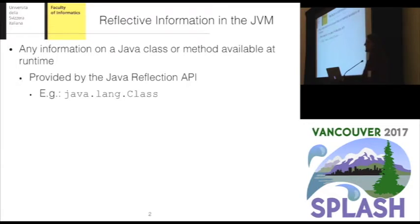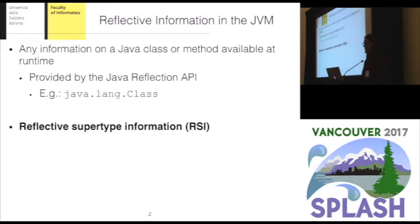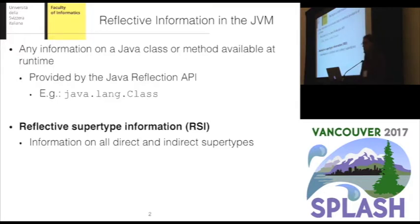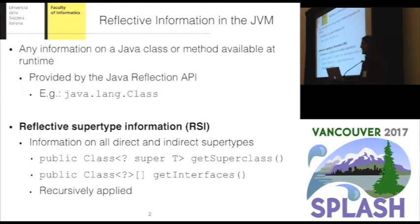In our work, among the several kinds of reflective information, we care in particular about reflective supertype information, which is a term we use to refer to information on any direct and indirect supertypes of a given class. For example, given an instance of a Java Lang class, one can access the direct supertypes by calling methods getSuperclass and getInterfaces. By calling recursively the same methods on direct supertypes, one can also know the indirect supertypes of that class.